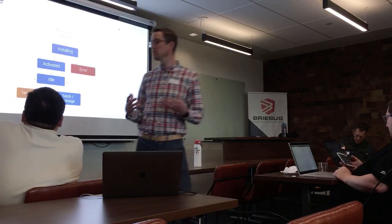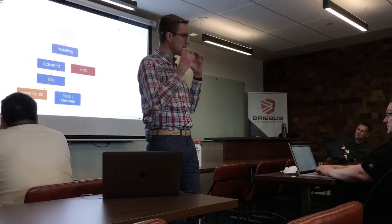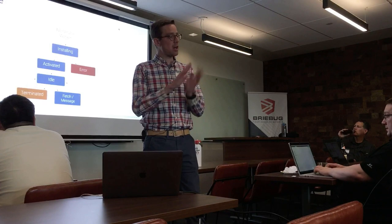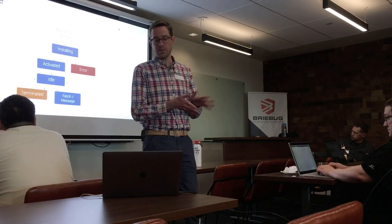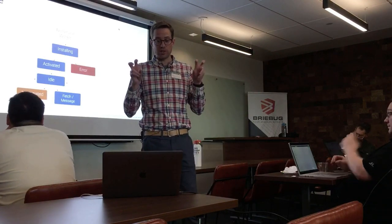Let's talk about the lifecycle of a service worker. When the user says yes to installing your PWA, it uses the service worker API, which has a simple lifecycle. First, we begin installing the service worker — during that time the application cannot be force-quit. Once done, it either errors out or becomes activated. Once activated, it's installed and ready to go, then it goes into idle mode.